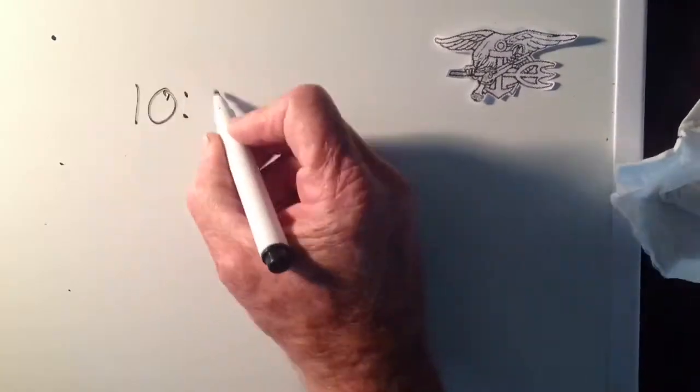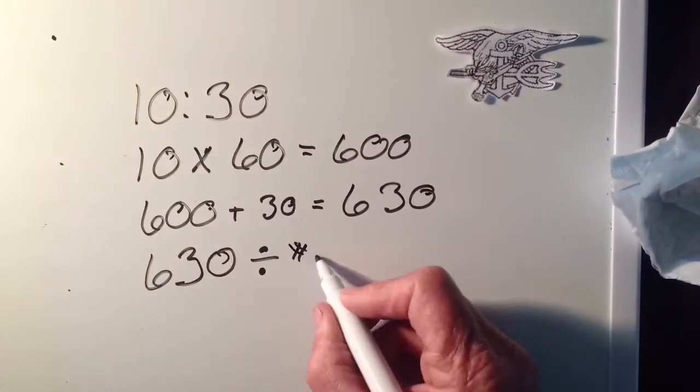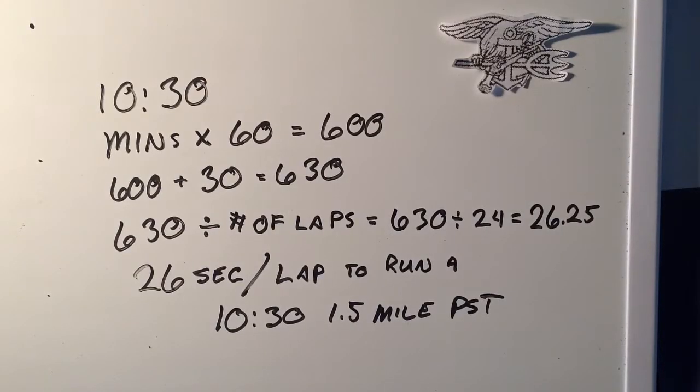If your RPMs fall below your calculated rate, you know you're running slower than needed to pass the PST, so you'll have to step it up. If you get a side cramp, analyze your body, figure out the problem, and get back into your RPMs. Using a 24-lap track: 630 seconds divided by 24 laps gives you 26 seconds per lap that you need to run.